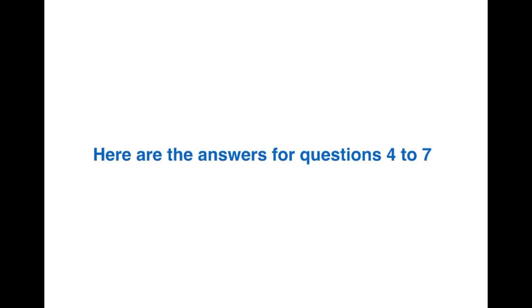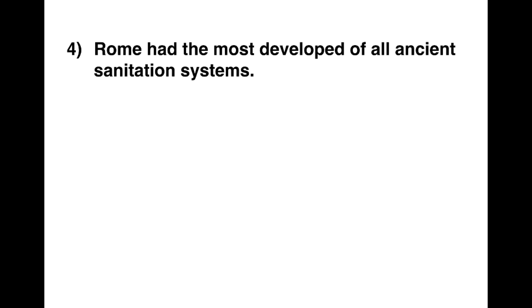Now I'm going to quickly give you the answers for questions four to seven on the worksheet. Question four: 'Rome had the most developed of all ancient sanitation systems.' The key words are 'most developed' — this is a comparison. There was no information in the passage about a comparison between Rome and other ancient systems, so the answer has to be Not-Given.